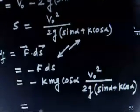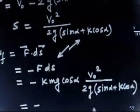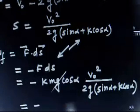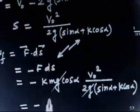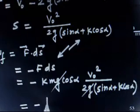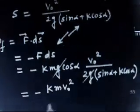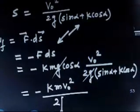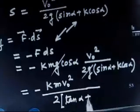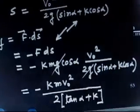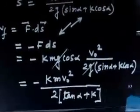Simplifying: work done equals −k·mg·cos alpha · v₀² / [2g(sin alpha + k cos alpha)]. The g cancels out. Dividing numerator and denominator by cos alpha, sin alpha / cos alpha is tan alpha and cos alpha / cos alpha is 1, so we get work done = −k·m·v₀² / [2(tan alpha + k)].